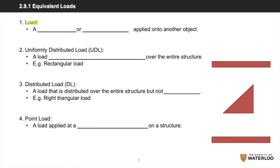A load refers to a weight or pressure caused by something or someone that is applied onto another object. There are different types of loads, but we will be focusing mainly on two categories. A uniformly distributed load, or UDL, refers to a load that is evenly distributed, or spread out over the entirety of the structure.